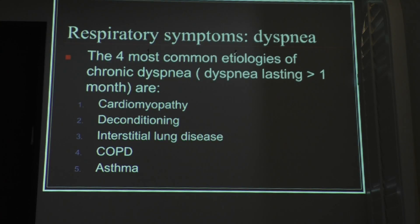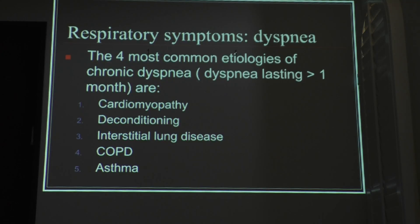The four most common etiologies of chronic dyspnea — dyspnea lasting more than one month — are cardiomyopathy, deconditioning, interstitial lung disease, COPD, and asthma.